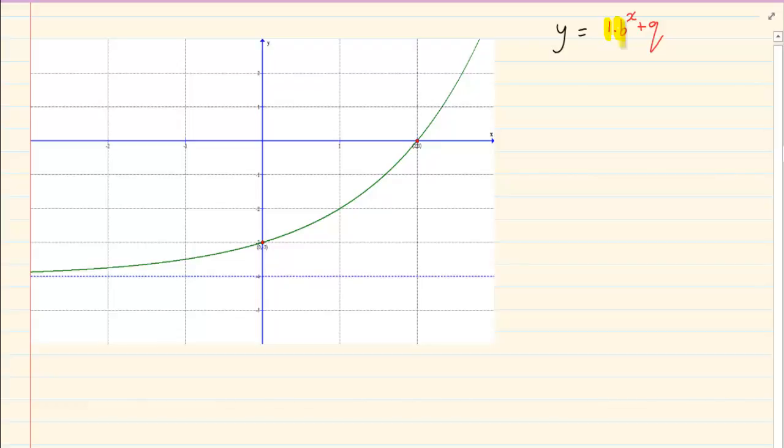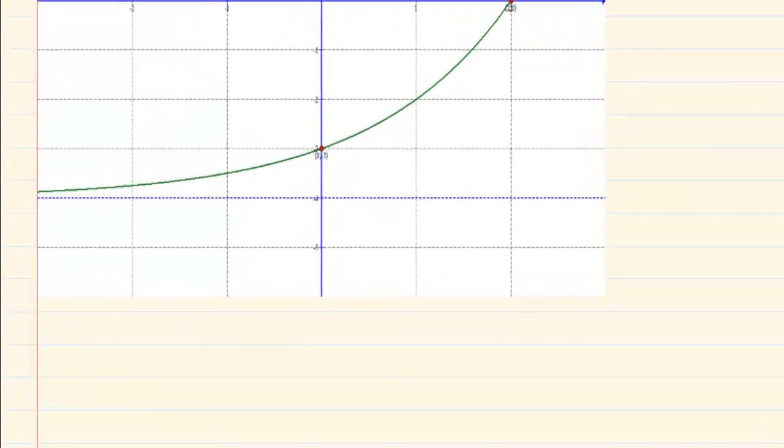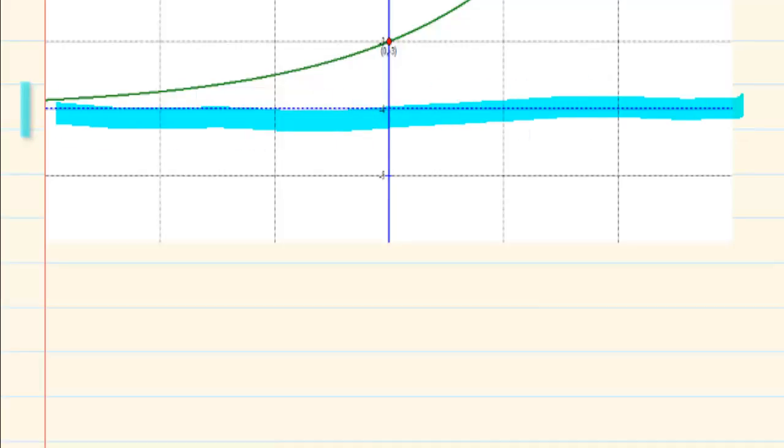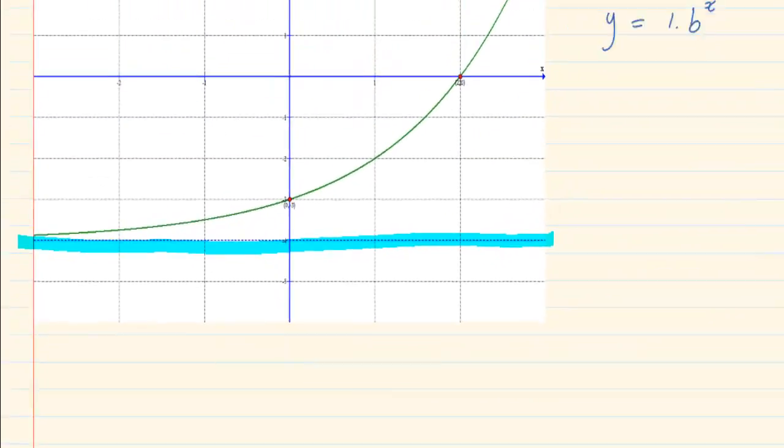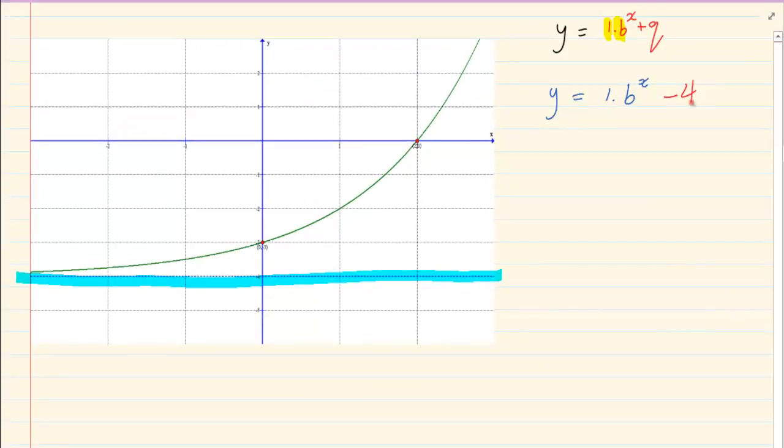They would never give you both an unknown a and b. So what do we do? We're going to start with q, just like all the other rules. So y equals 1 times b to the power of x and our q is minus 4. So we're going to have minus 4.